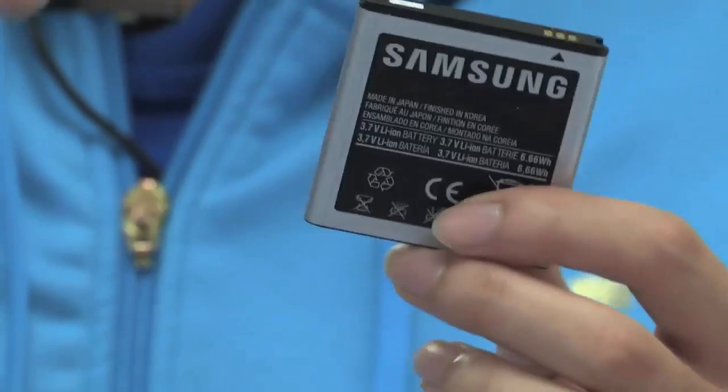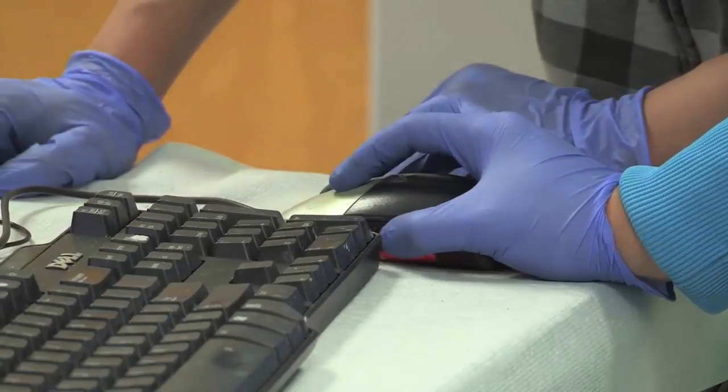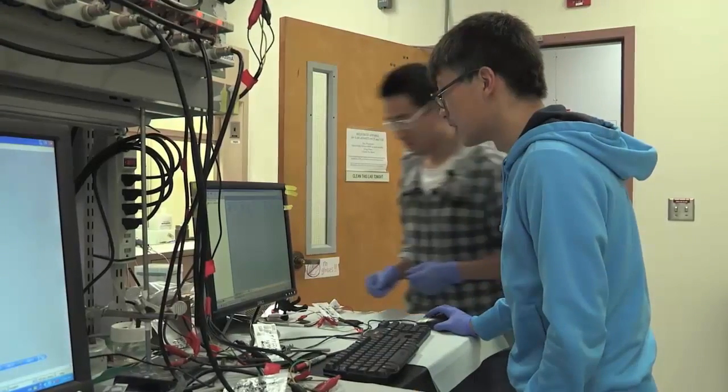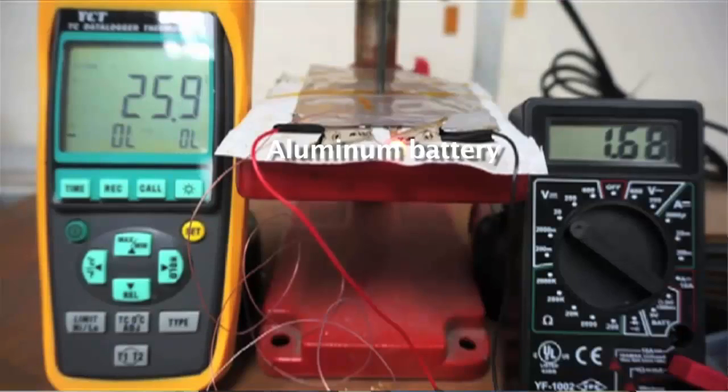This is a lithium ion battery which we use a lot in our daily lives, for example in our cell phones and laptops. Commonly, if you drill a hole through a lithium ion battery, it will probably catch on fire. But our aluminum battery is non-flammable.